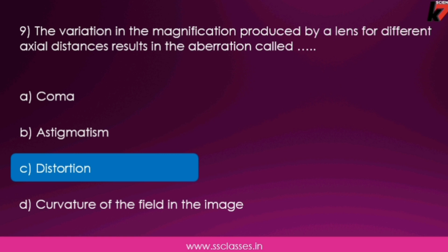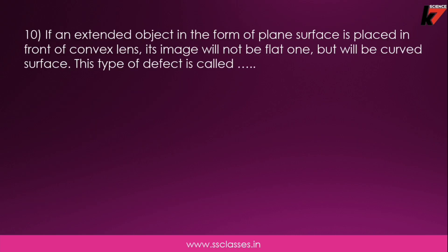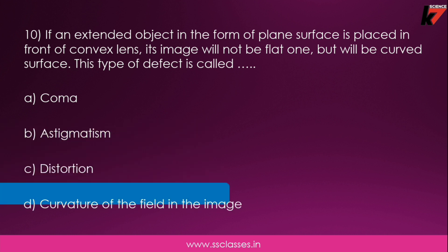Tenth question: if an extended object in the form of a plane surface is placed in front of a convex lens, its image will not be flat but will have a curved surface. This type of defect is called — coma, astigmatism, distortion, or curvature of field? The correct answer is option D: curvature of field.